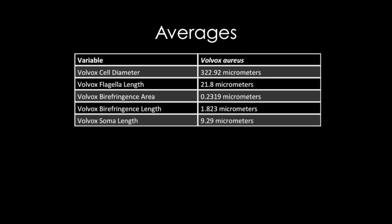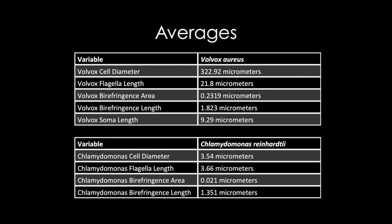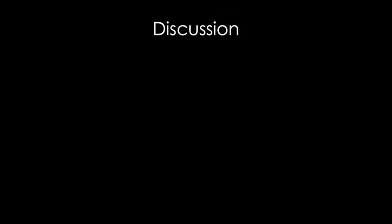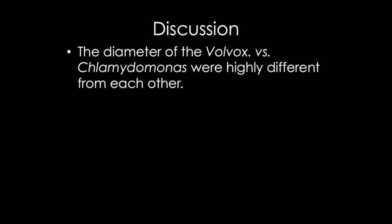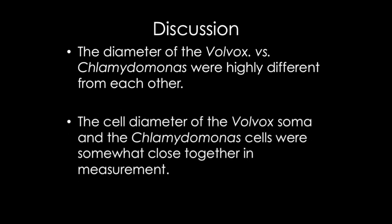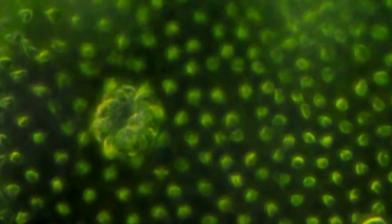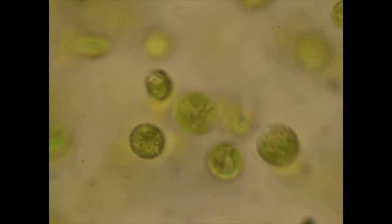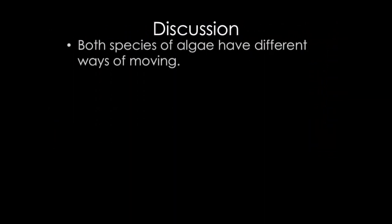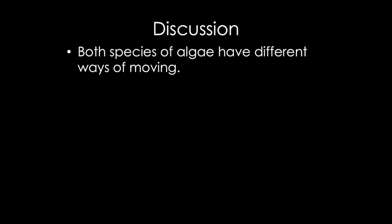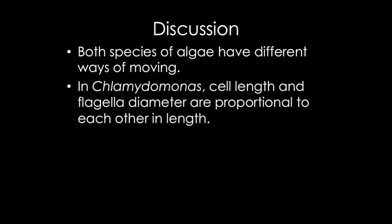The following are the average numbers for the data in this project; these results will be explained in the discussion section of this video. The diameter of the Volvox versus Chlamydomonas cells were highly different from each other, while the somatic cell diameter of Volvox and the Chlamydomonas cells were somewhat closer together in measurement. Both species of algae have different ways of moving. In Chlamydomonas, cell length and flagella length are proportional to each other. In Volvox, the cell length is much larger than the length of the flagella, showing that the flagella did not grow in proportion to the cell during evolution.